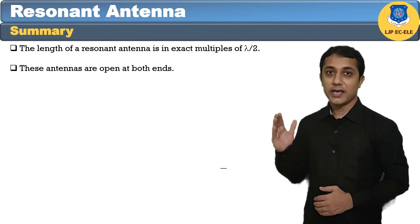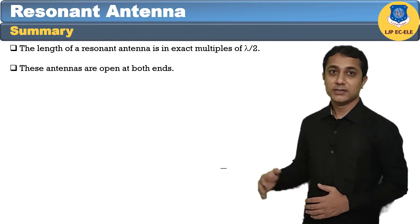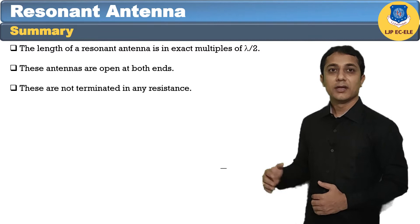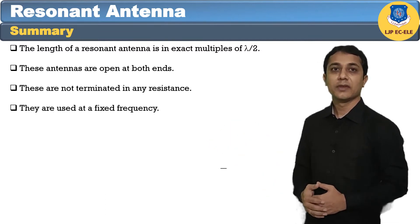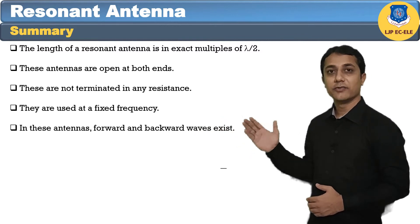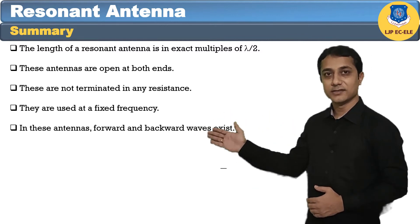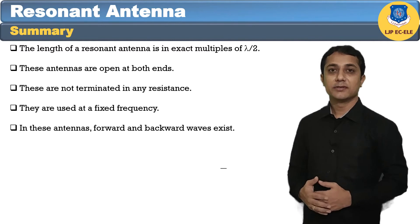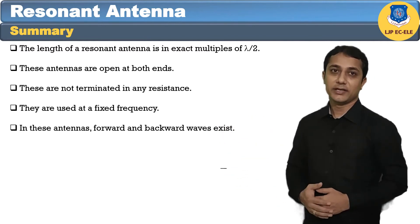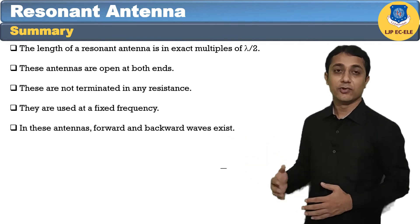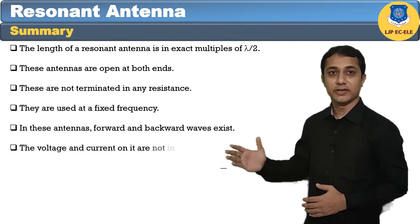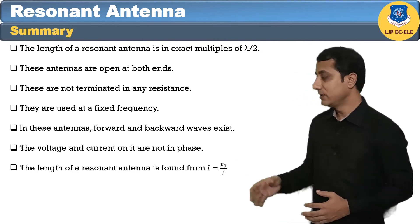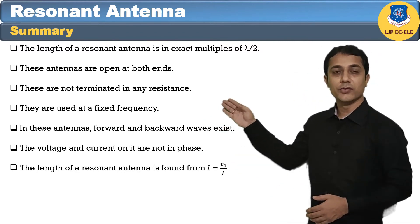The length of the resonant antenna is an exact multiple of lambda by two. These antennas are open at both ends and are not terminated by any resistance. They are used at a fixed frequency. In this antenna, forward and backward waves exist, meaning standing waves exist. The half-wave antenna has distributed inductance and capacitance and acts like a resonant circuit. The voltage and current on it are not in phase. The length of the resonant antenna is found from the equation: L = V₀ / F.